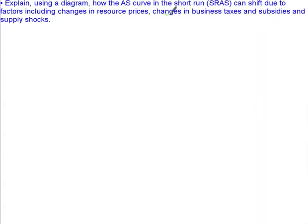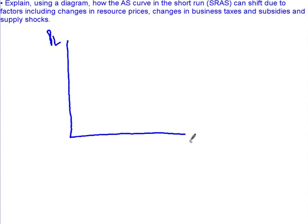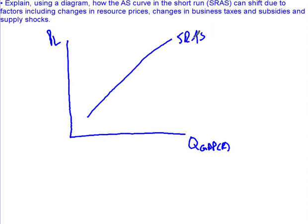Now let's look at how the aggregate supply curve in the short run can shift — we call those the determinants of aggregate supply. On the new diagram with price level on the y-axis and quantity of real GDP on the x-axis, the general rule of thumb is: if anything happens in the economy that costs businesses money, it shifts the aggregate supply curve to the left. If something happens that saves businesses money, it shifts the short run aggregate supply curve to the right.